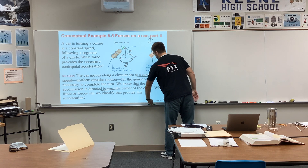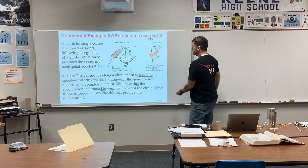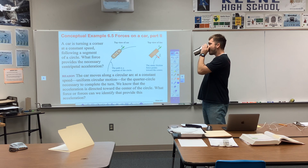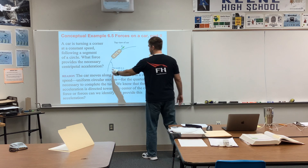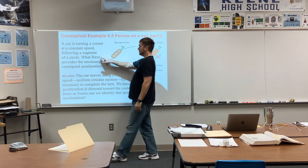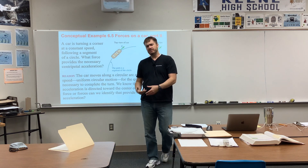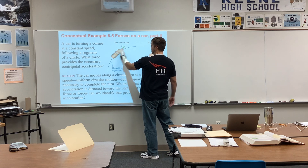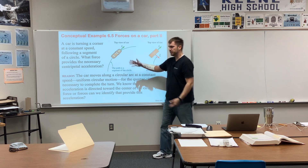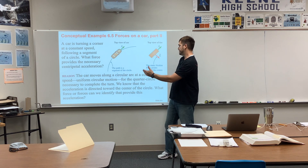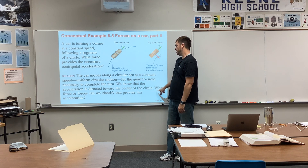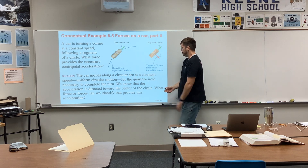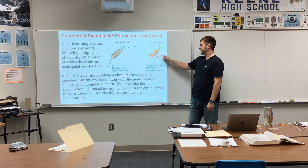We're looking at a car turning a corner at constant speed, following the segment of a circle. What force provides the necessary centripetal acceleration? The velocity is always tangent, so this is uniform circular motion. The acceleration must point toward the center of the circle. The normal force is pushing up out of the pavement, so it's not that. The short answer is: it's static friction — that's the only force pointing toward the center.